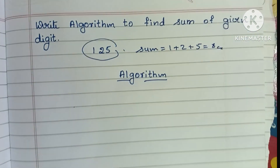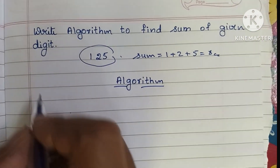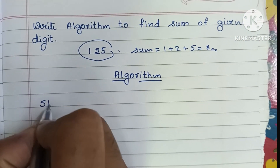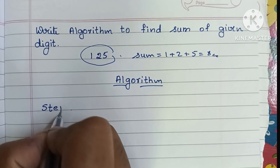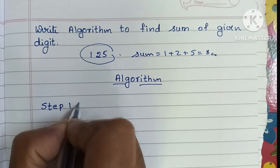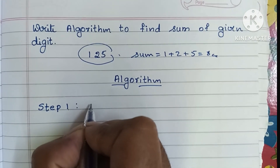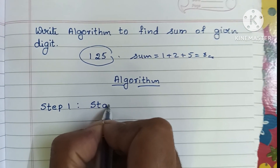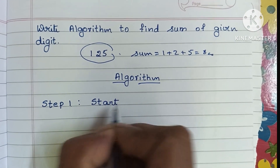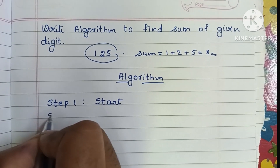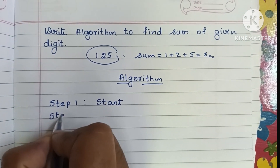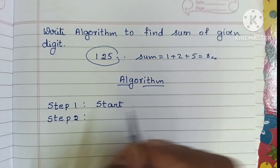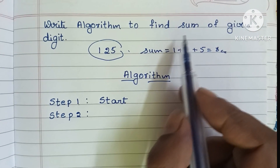An algorithm is a step-by-step process to solve a problem. Step 1 in an algorithm is always the start statement, so first we have to write the start statement.